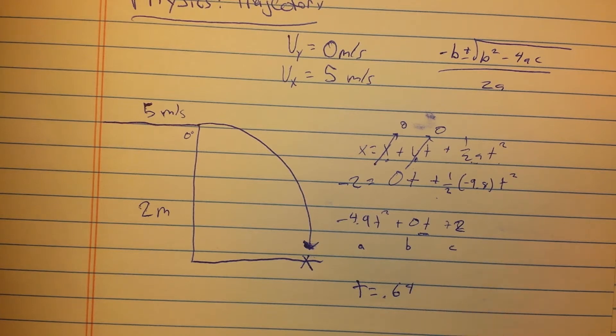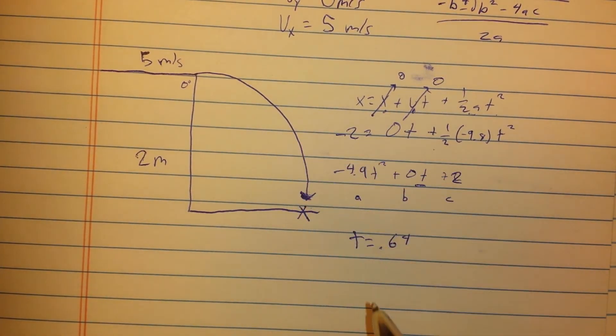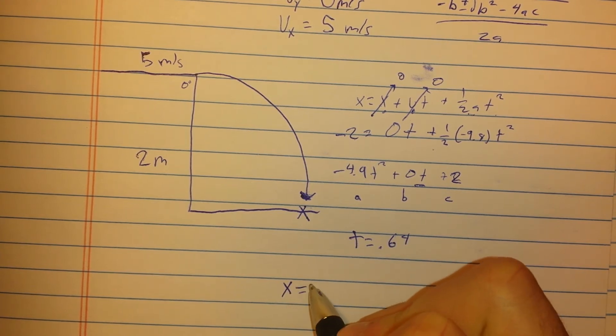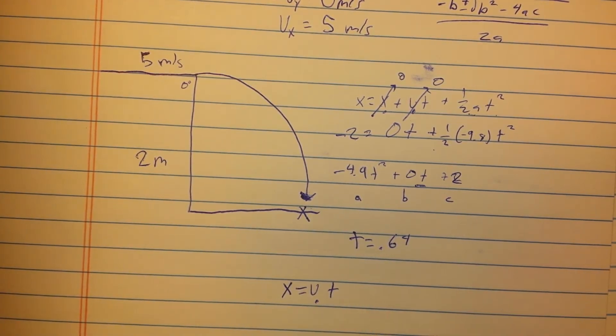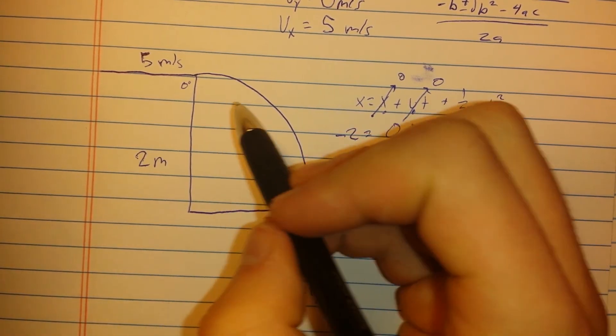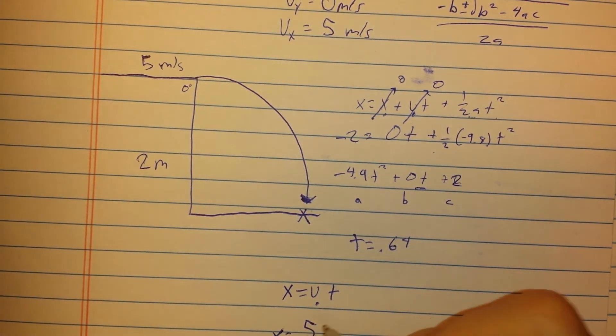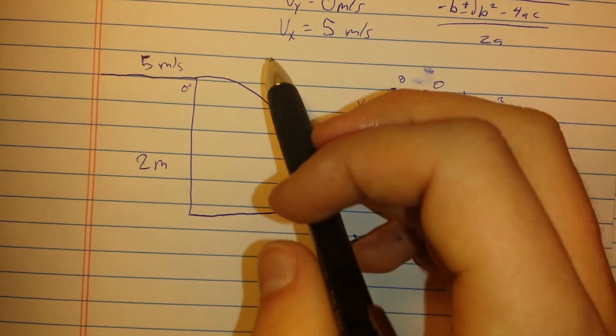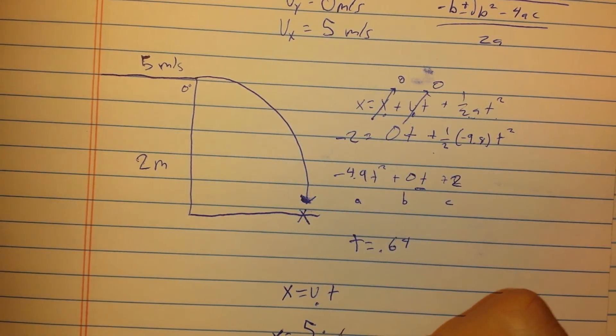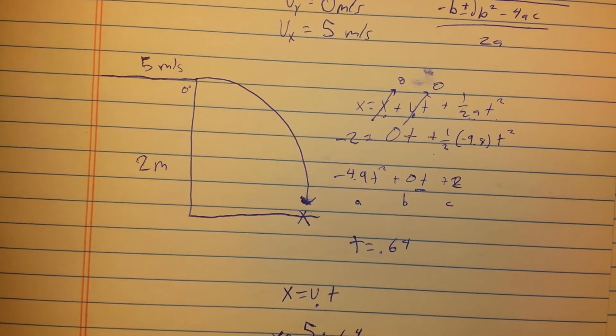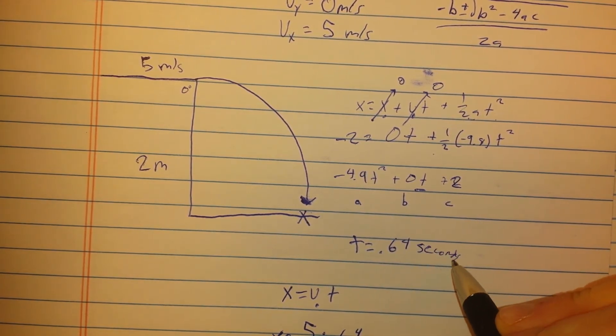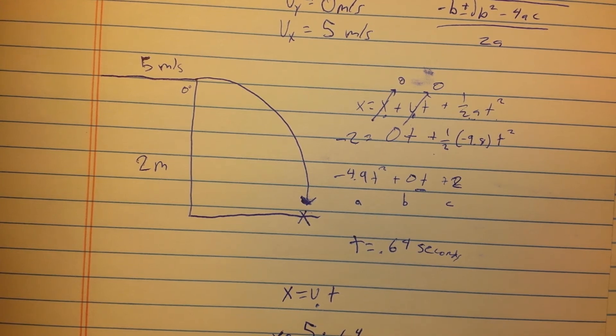And then, it makes this next part so much easier, so not only the time it takes to hit the ground. Now we have that, we're going to use our simple equation of distance equals v₀, initial velocity, times T. Our distance is what we're trying to find, our v₀ is our 5, because it's our horizontal, it's our Vx is what we're going to use, times our time of 0.64, and that equals x equals 3.2 meters.